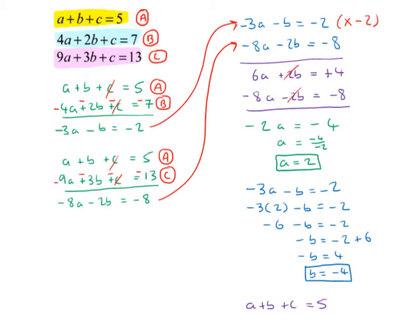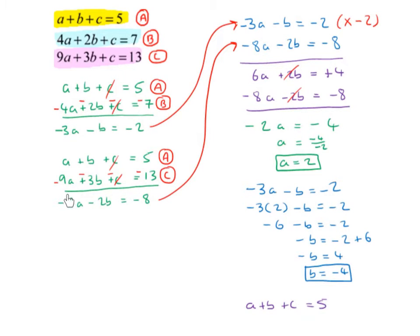Here are the three equations labelled (a), (b), and (c). Taking equations (a) and (b), I'll cancel out the c terms. From (a) minus (b): a − 4a = −3a, b − 2b = −b, and 5 − 7 = −2, giving −3a − b = −2. Then taking equations (a) and (c) and cancelling c: a − 9a = −8a, b − 3b = −2b, and 5 − 13 = −8, giving −8a − 2b = −8.